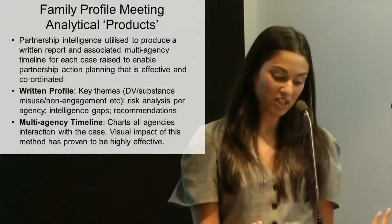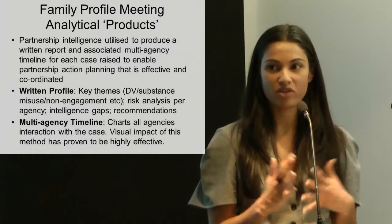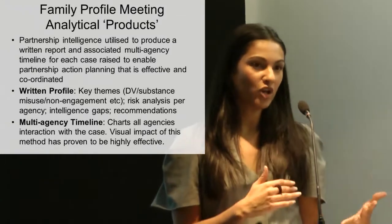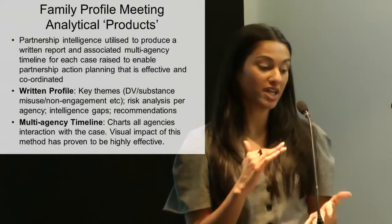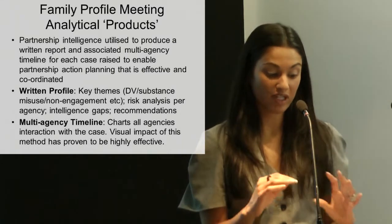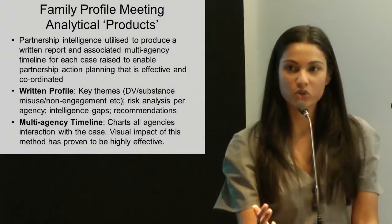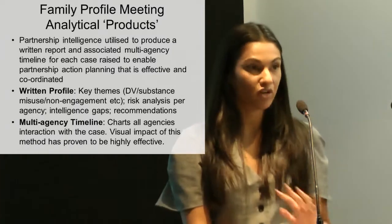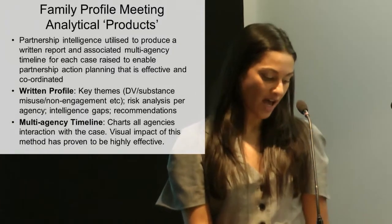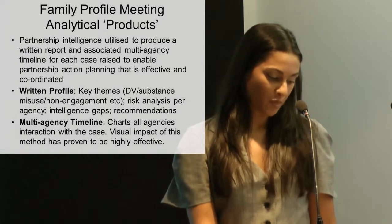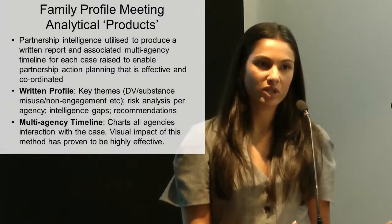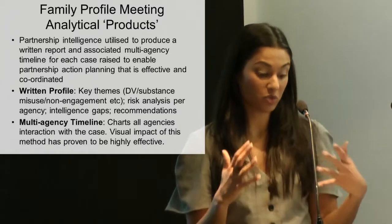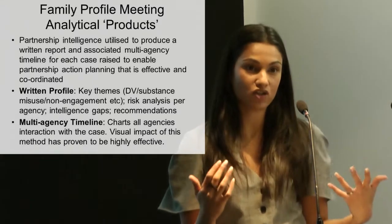Those key themes include things like domestic violence, mental health, and whether the family has evidence of lack of engagement. We then follow that with a risk analysis broken down for each agency, so the risks for each agency are really clear. We then identify our intelligence requirements for the future and make recommendations about how to intervene. Alongside that written profile, we create a multi-agency timeline which charts all the different agencies' interactions with that child and that case.